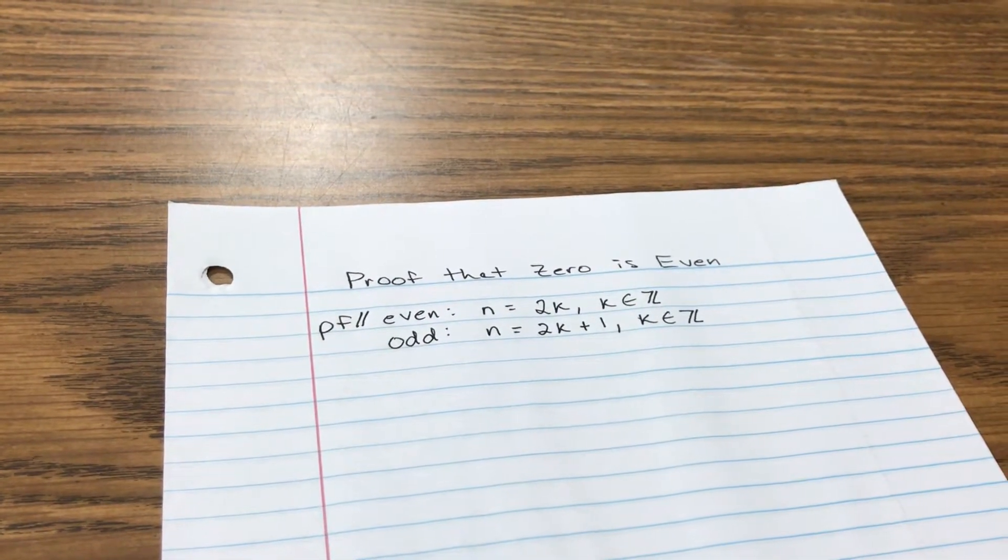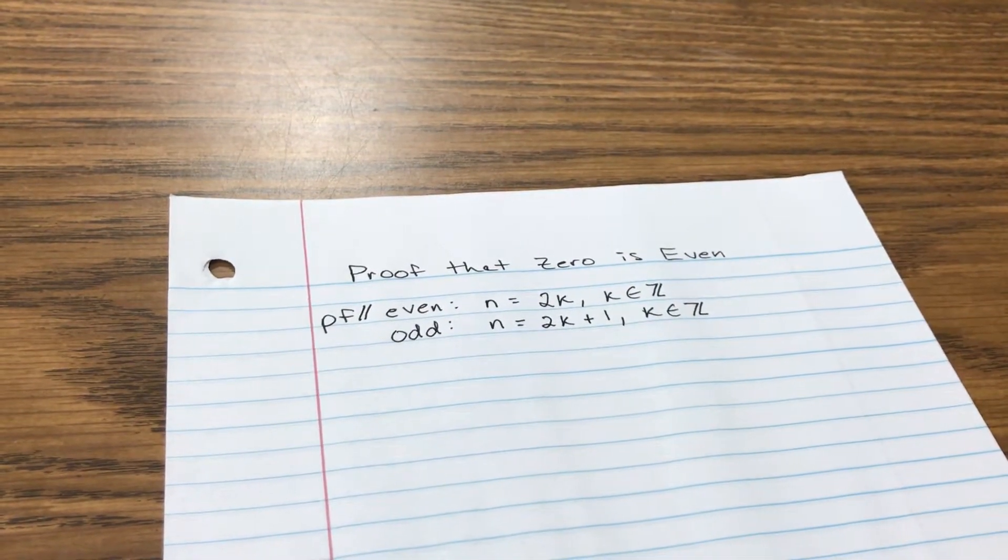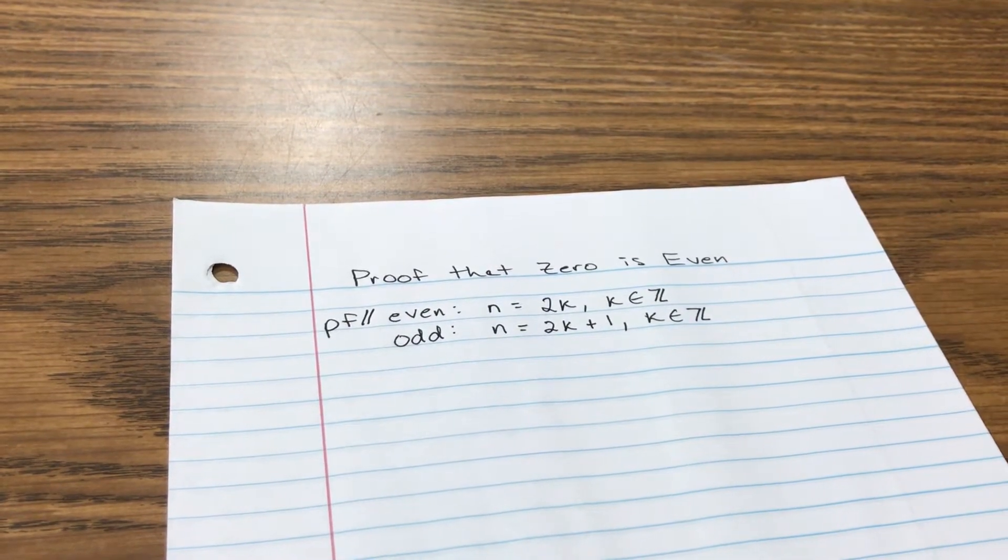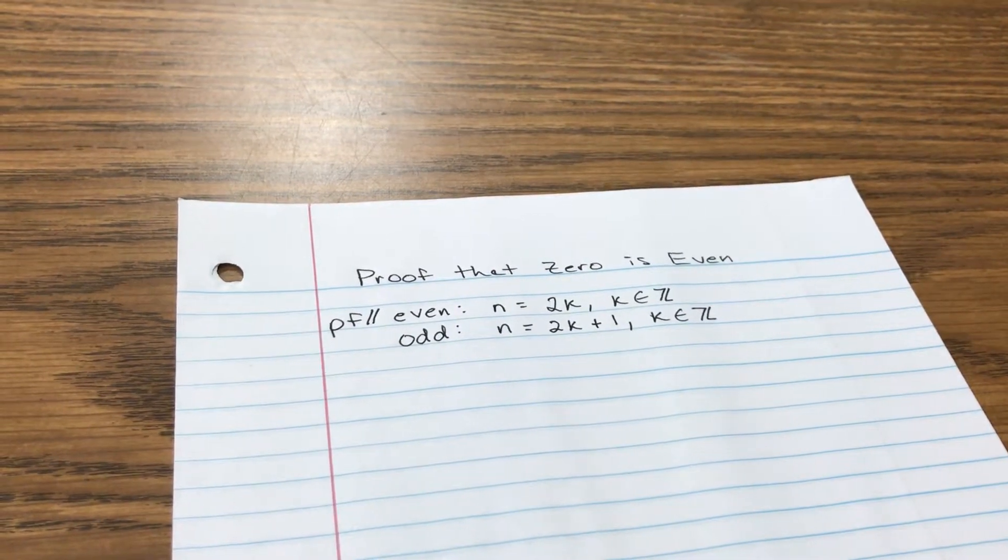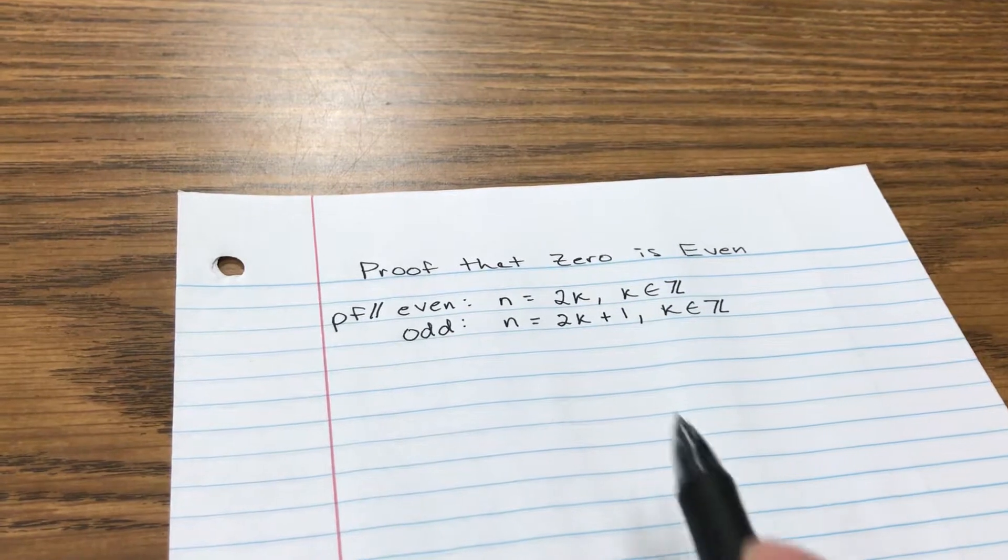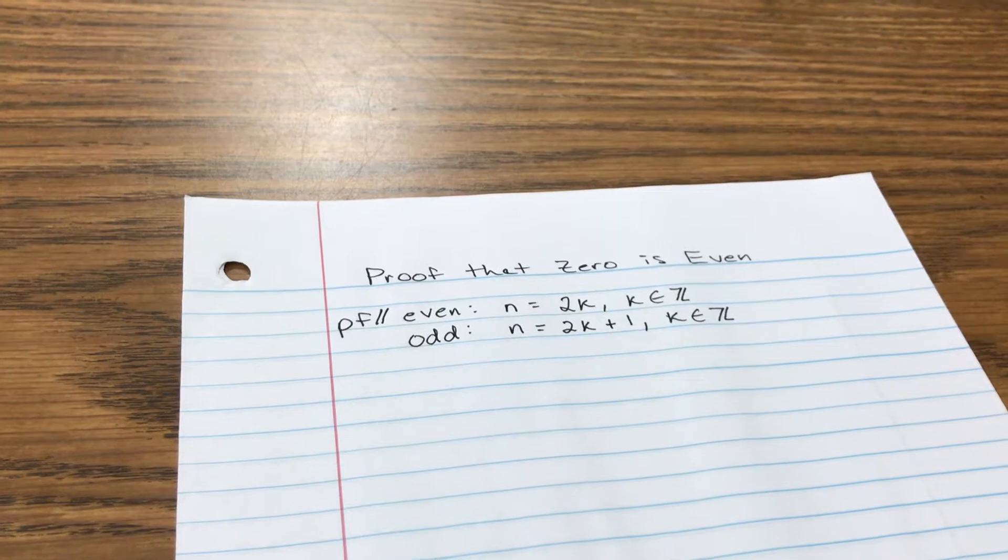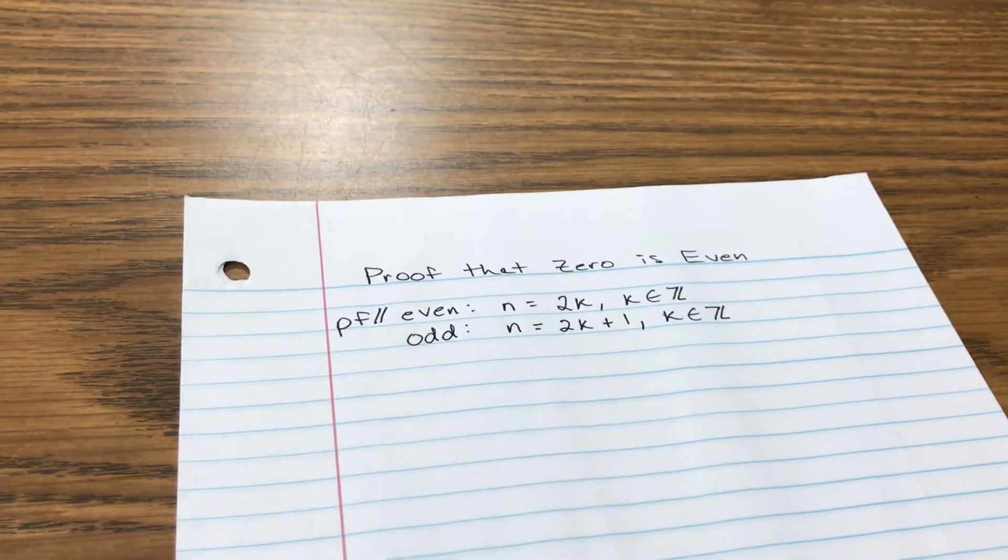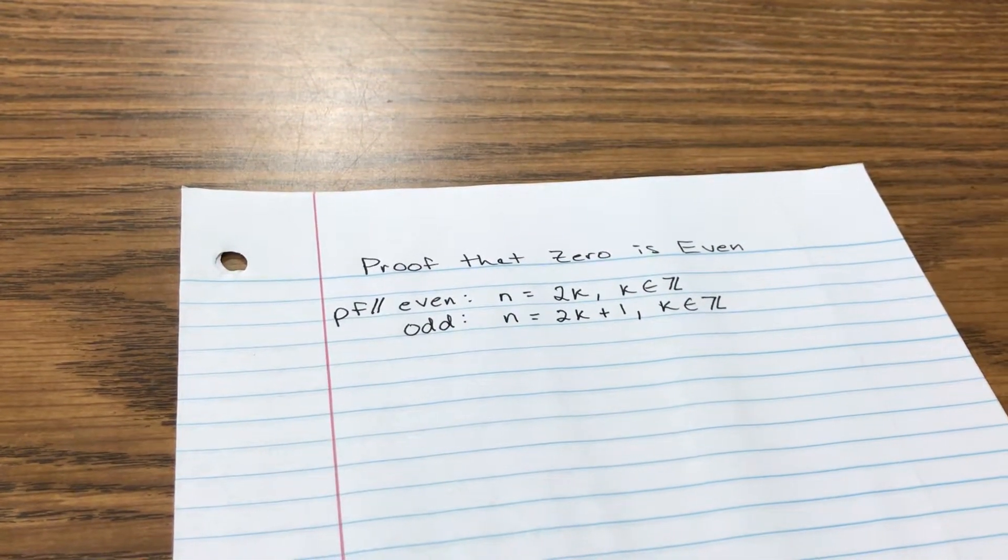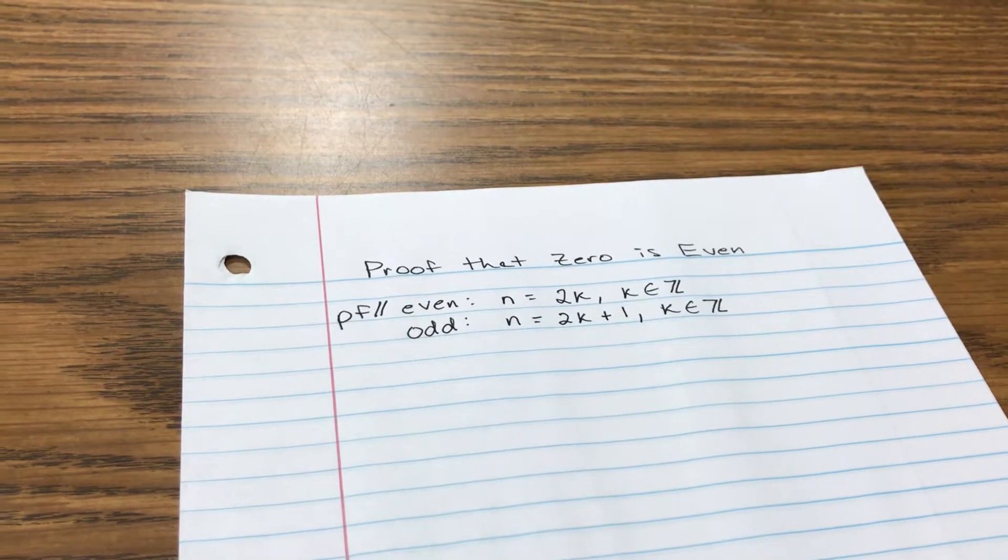How about the odd numbers? What if k was 1? Well, 2 times 1 is 2, but then you got to add that 1 at the end, so 2 plus 1 is 3, and 3 is an odd number. So these definitions seem to be pretty airtight; they seem to work.